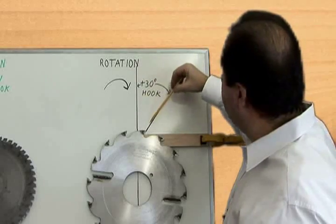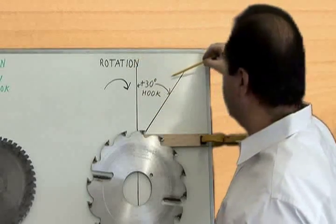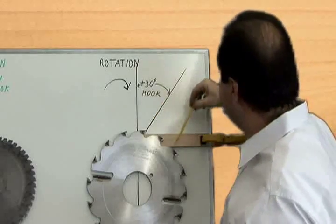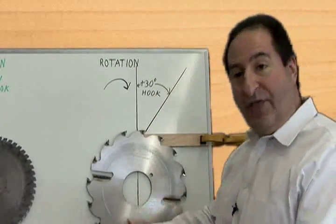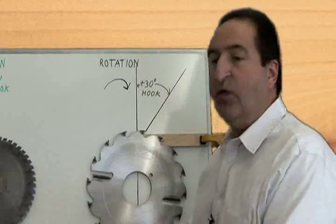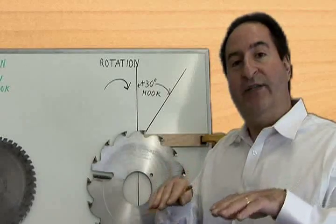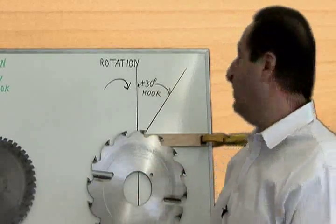If the tooth is leaning into the direction of rotation, that's a positive hook saw blade. That will hold the material down onto the table saw, not throwing it at your stomach. It'll shear the wood fibers better also because it's got something supporting it on both sides. It'll hold it down and give you a really good shearing action.